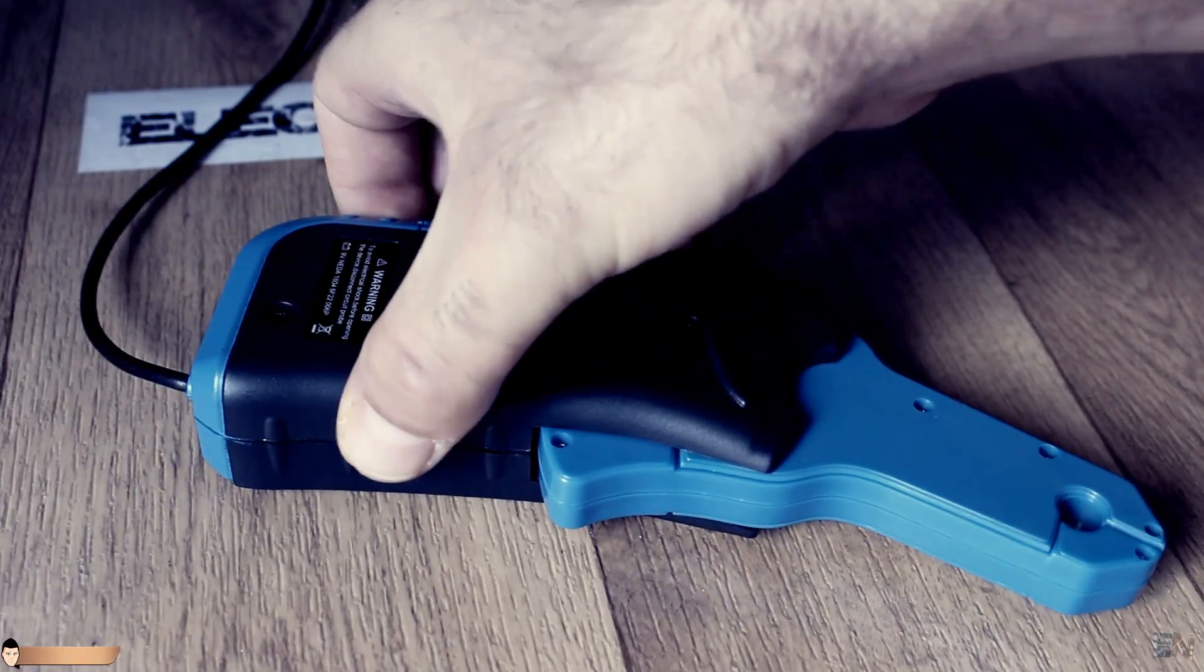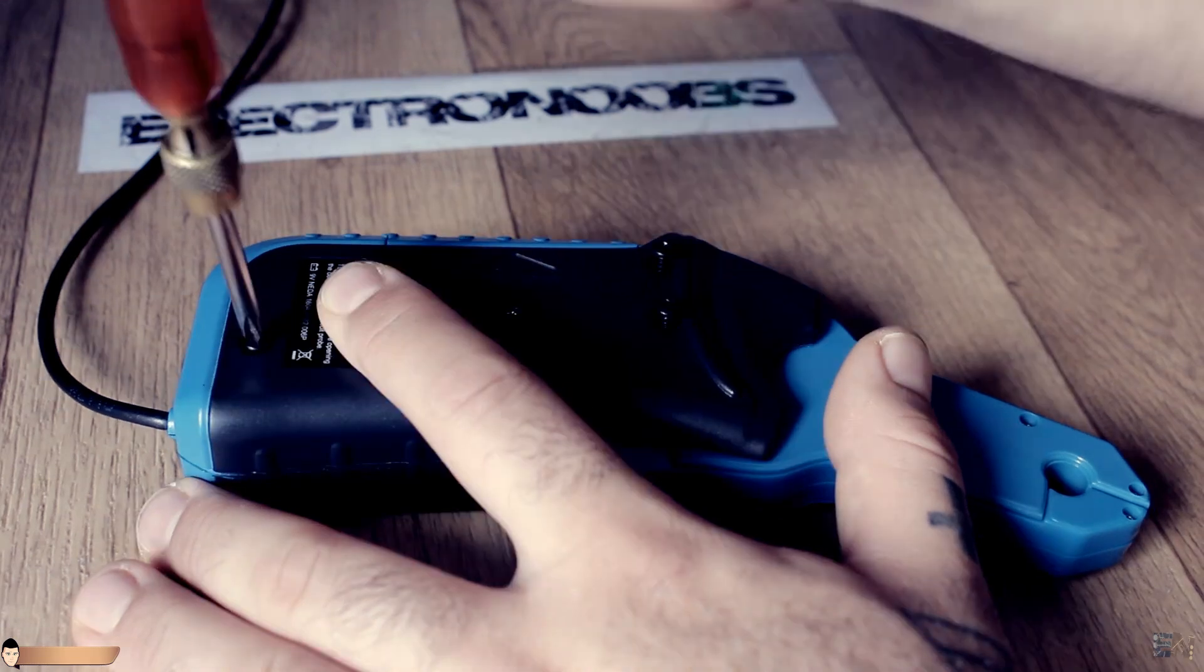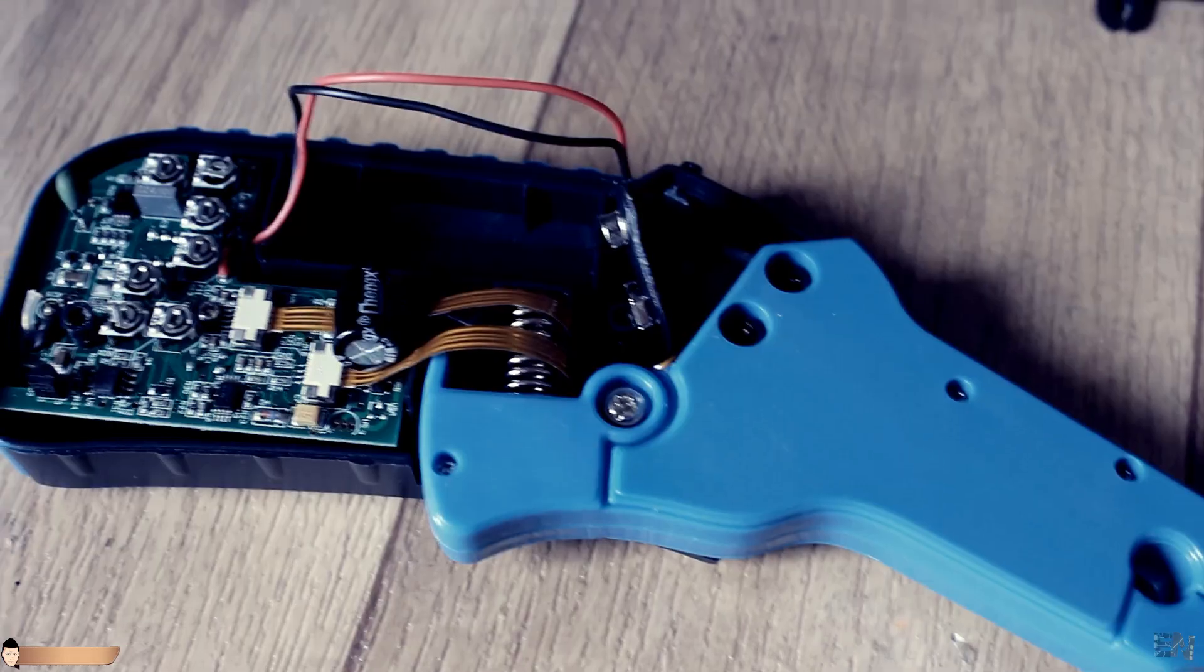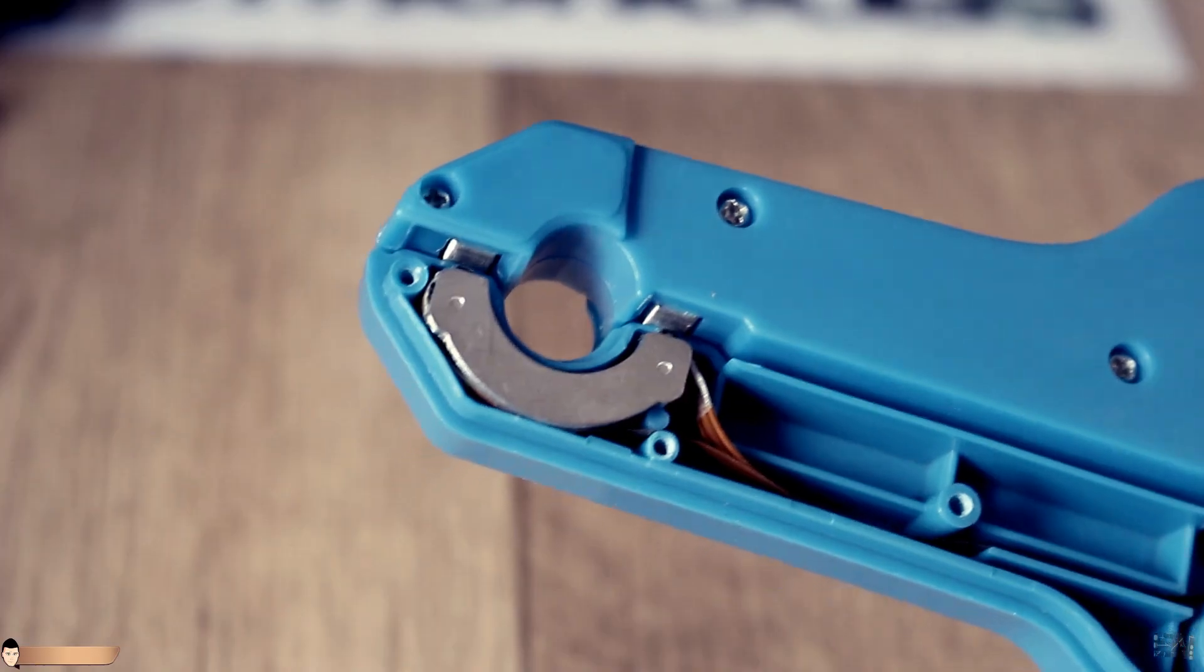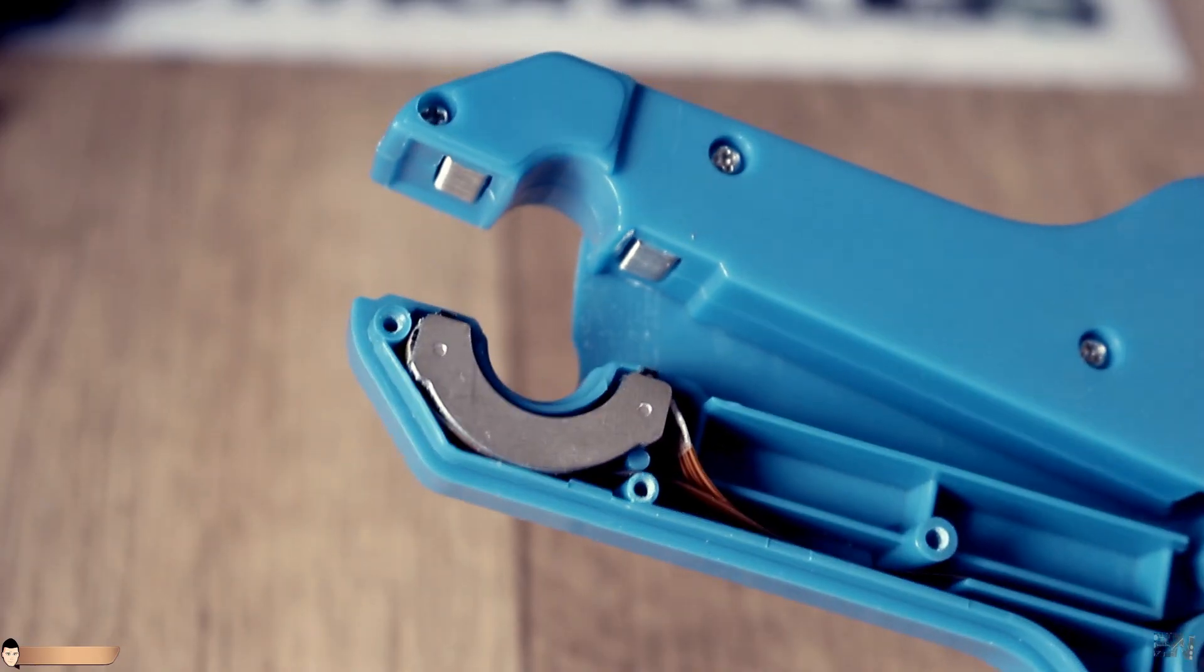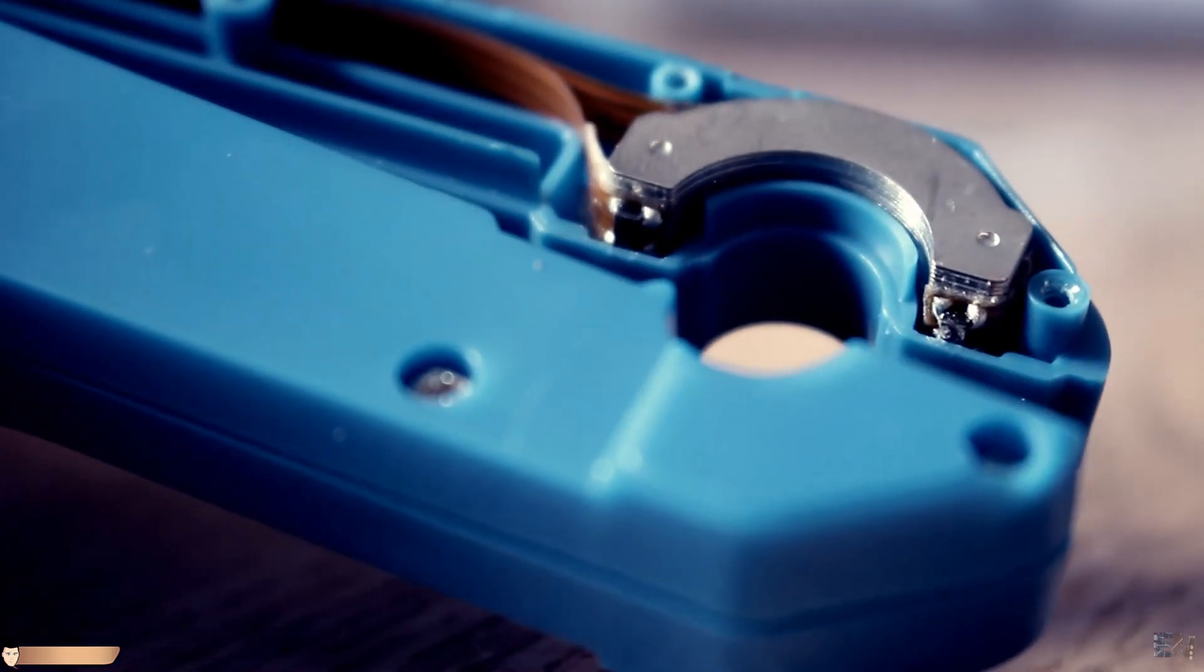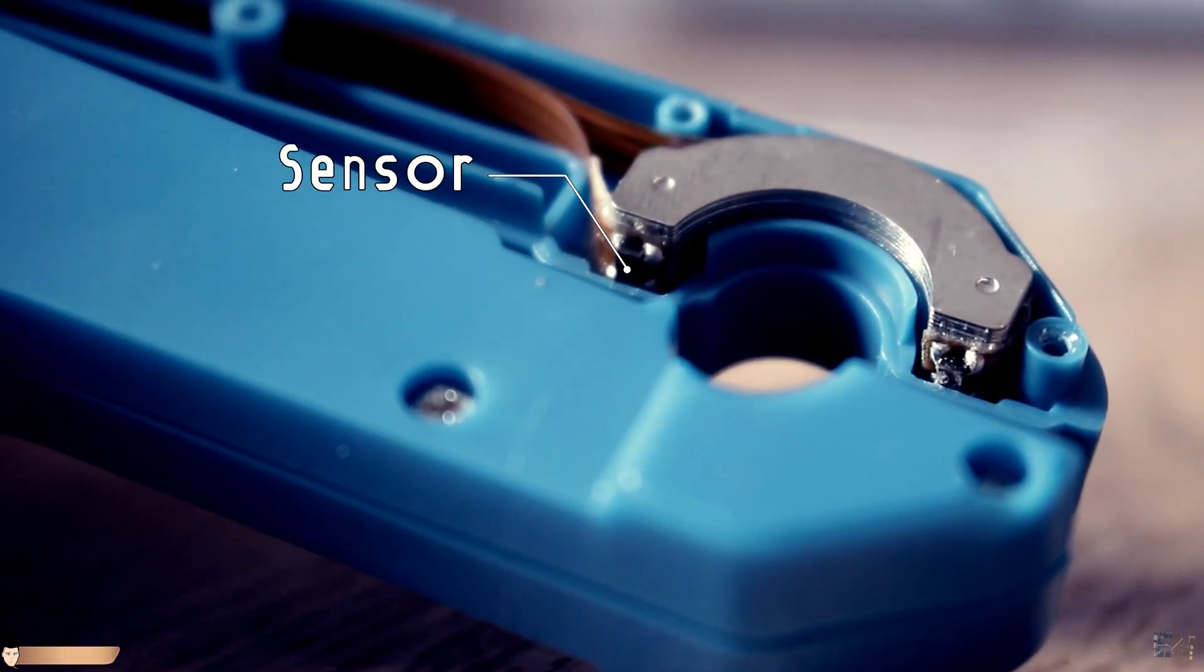For that I will first open the case and observe its components. As I guessed, the circuit is quite simple. On the tip we've got the metal magnetic core that will carry the magnetic flux. Here we should also have some kind of a sensor and that's it.